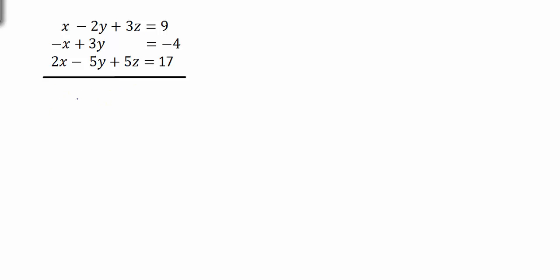We want to translate this system into an augmented matrix. We're just going to bring down the coefficients, going from left to right with x, y, and z. Notice the second equation is missing a z, so think of it as 0z. Be careful to make sure that if you're looking at a problem, the variables are lined up. You always want to go left to right — your x, your y, your z — depending on the number of variables.